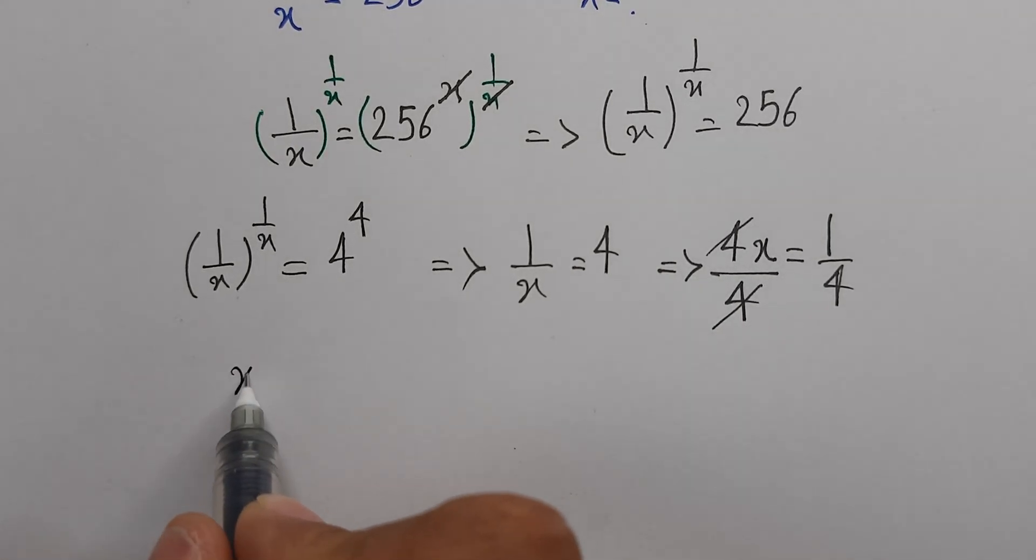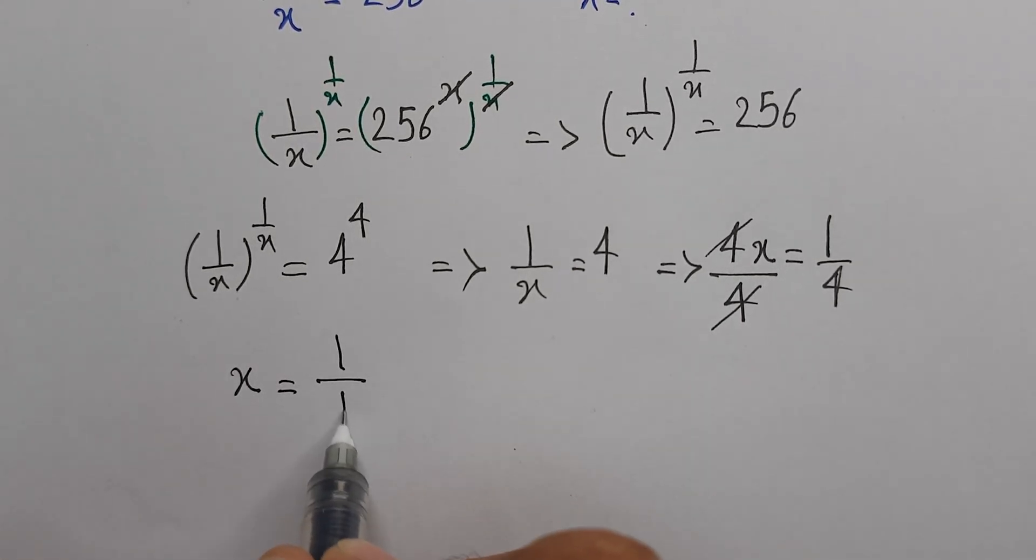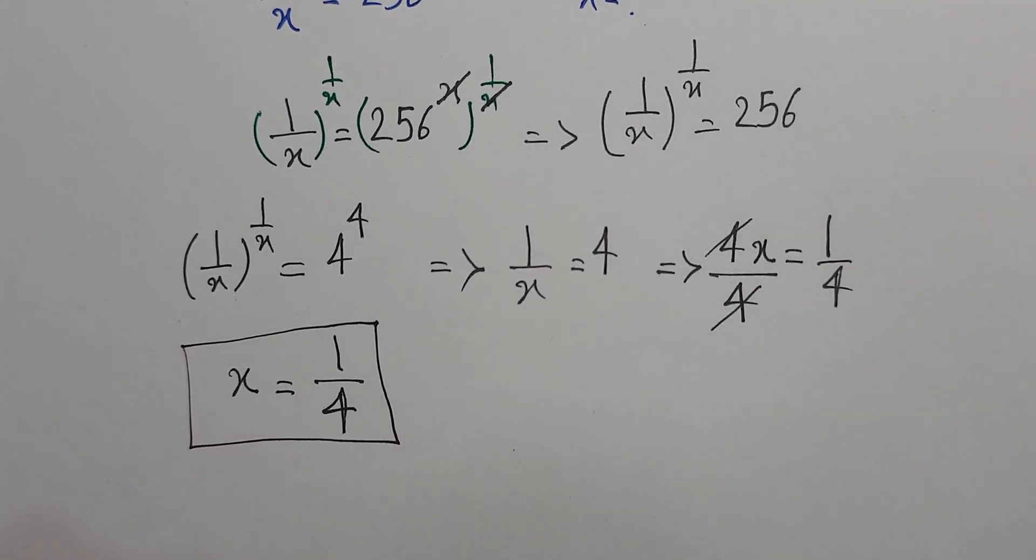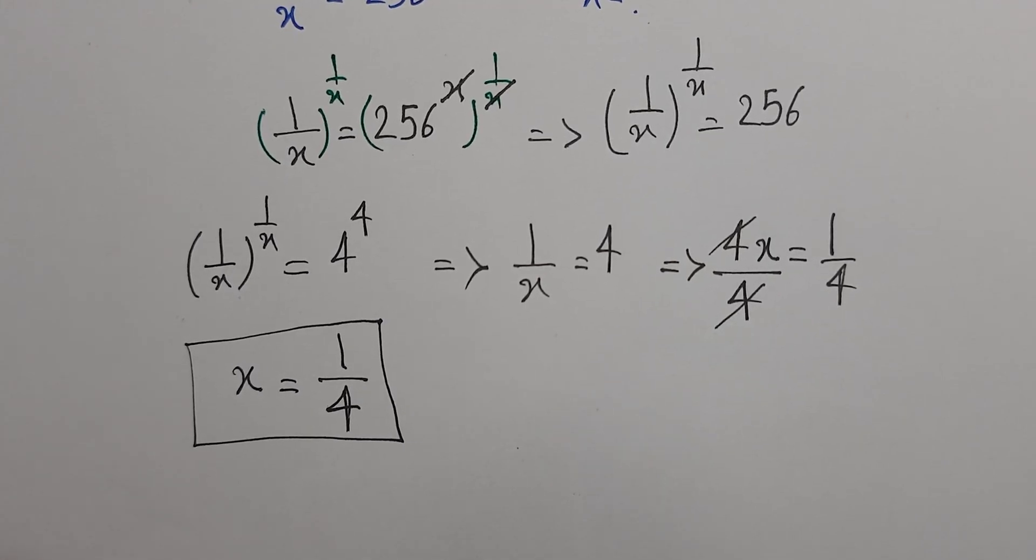We have x on the left side and 1 over 4 on the right side. This is our answer. If you like it, don't forget to subscribe. Goodbye guys.